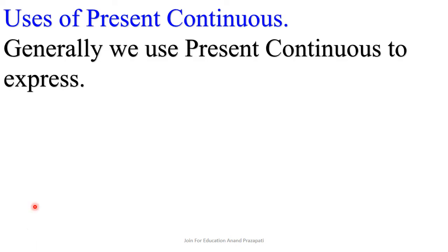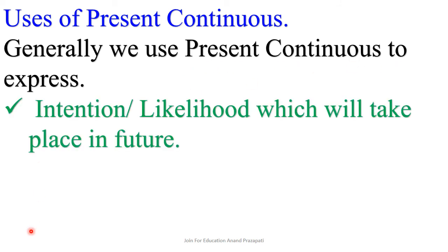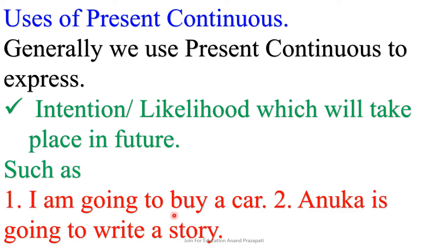Generally, we use present continuous to express intention or likelihood which will take place in the future. For example, 'I am going to buy a car.' At the present time, we are not buying a car, but in the future I am going to buy one. Similarly, 'Anuka is going to write a story' — at present she is not writing a story, but in the future she will. Therefore, to express this intention or likelihood, we use present continuous tense.